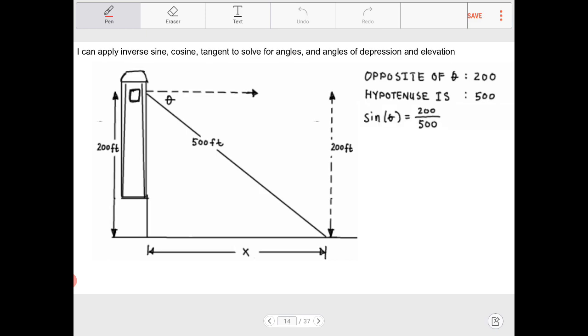Sine of theta, therefore, is equal to 200 over 500. Or theta is equal to arcsine of 200 over 500. Pop this into the calculator. I end up with the angle of depression being 24 degrees.